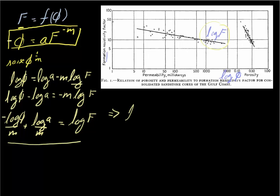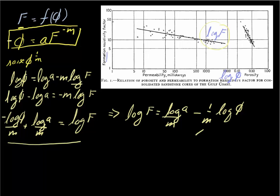This basically tells us that the log of F is equal to log of a over m, minus 1 over m times the log of phi. There is our negative slope — phi is now our independent variable. Log of phi is our x, log of F is our y, and the intercept is equal to log of a over m.